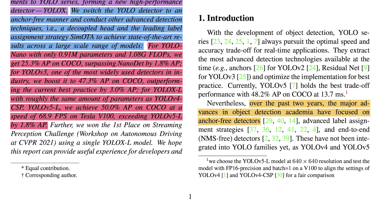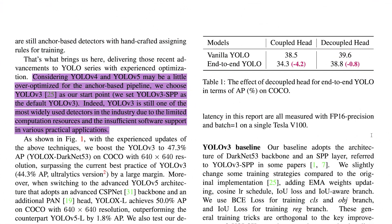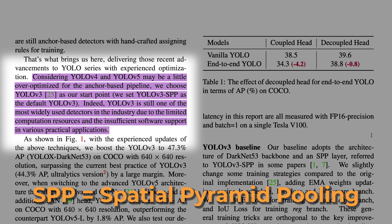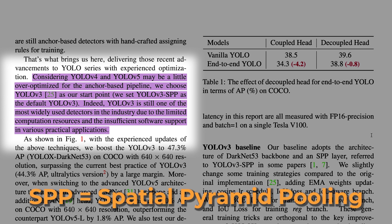YOLO V4, V5 are still using anchor-based detectors and hand-crafted assignment rules. In this section, they are saying, as YOLO V4 and V5 are a little over-optimized for anchor-based manner, they chose YOLO V3 Darknet-53 model as their baseline model. But they did not use the original YOLO V3. They used a version called YOLO V3 SPP. Here SPP stands for Spatial Pyramid Pooling.